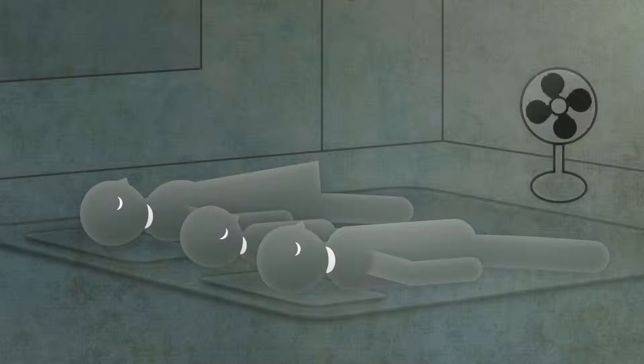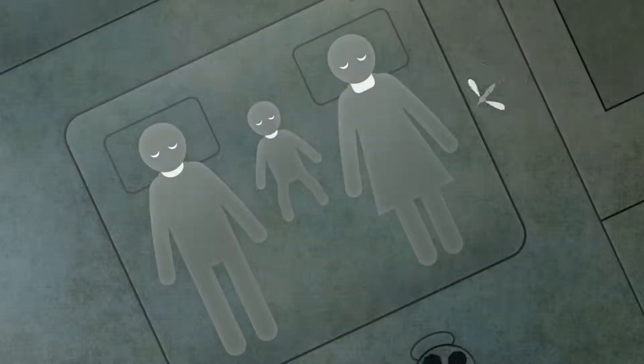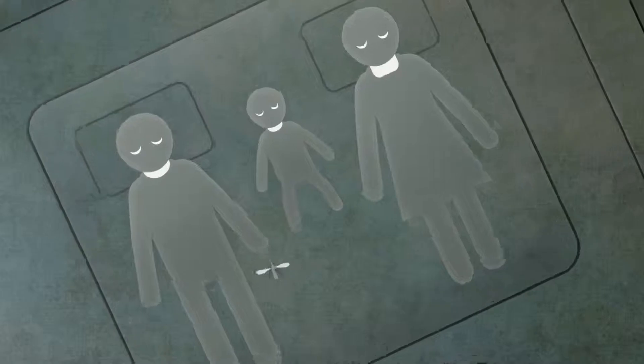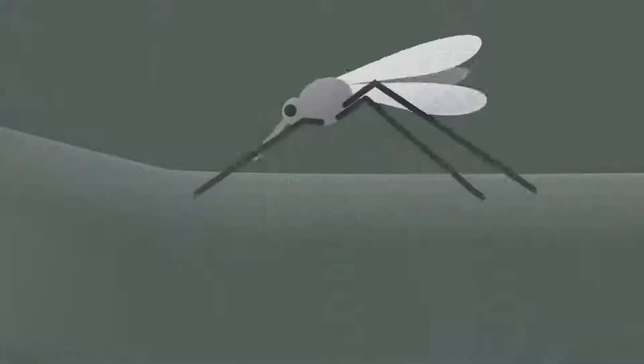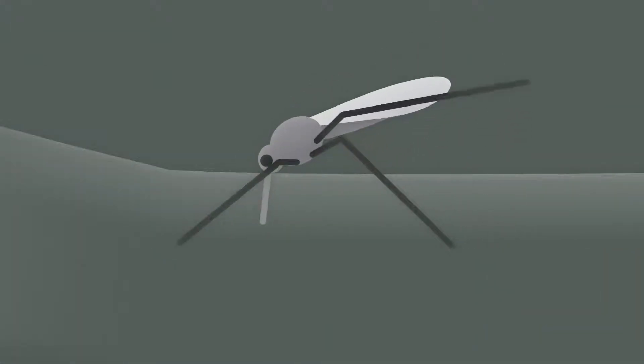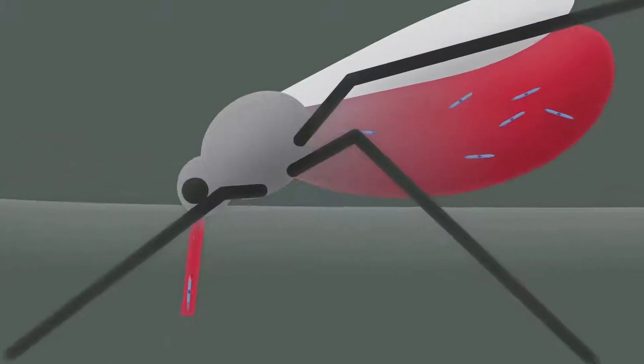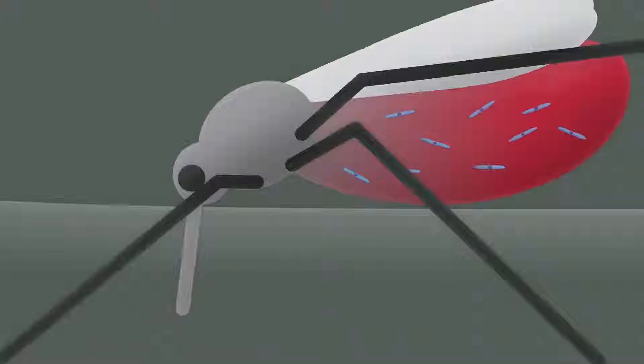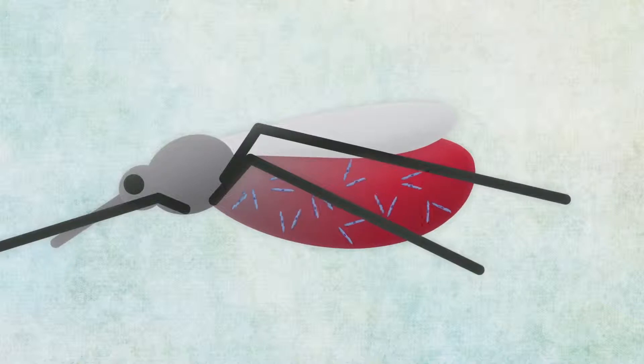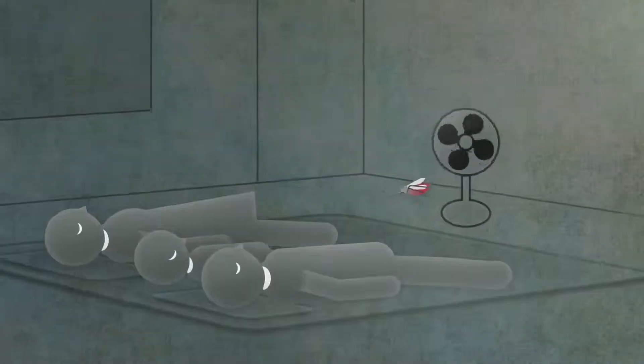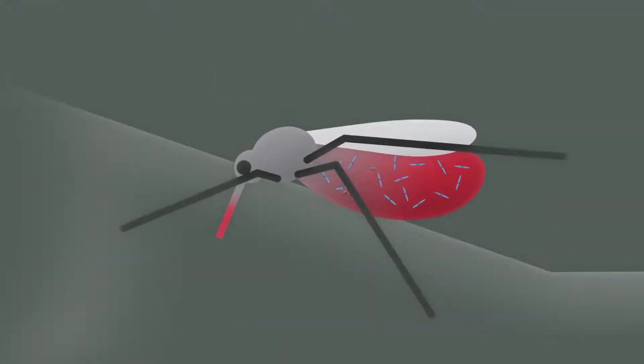The female Anopheles bites at night to feed on human blood, and if its victim is already infected, the mosquito sucks in not only blood, but also numerous parasites. Once in the mosquito's gut, the parasites multiply, divide, and then move to the salivary glands. And when it bites again, the parasites invade the next victim's blood.